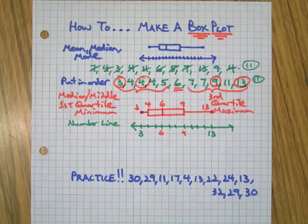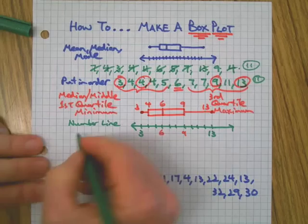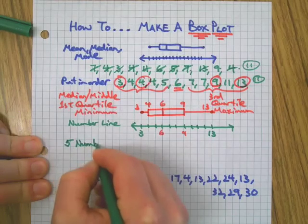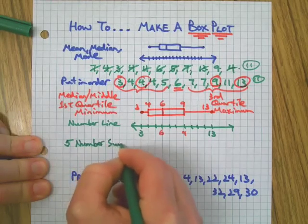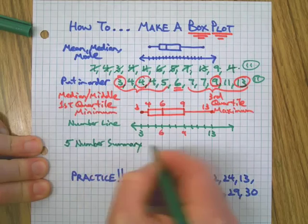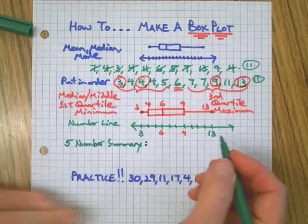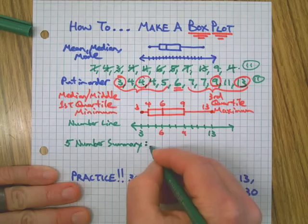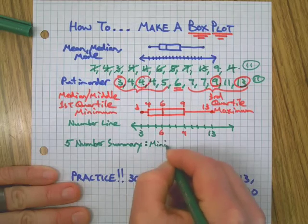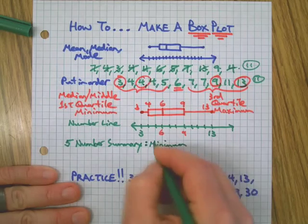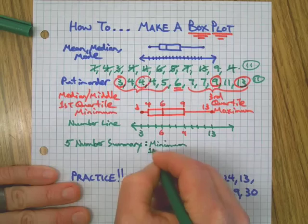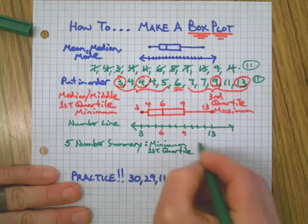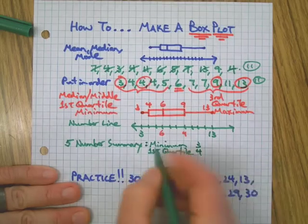We've labeled everything. We've labeled the five numbers, and that's what leads us to what's called a five number summary. If you label a box plot while you're making it, your five number summary is all served up and ready to go.